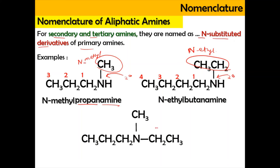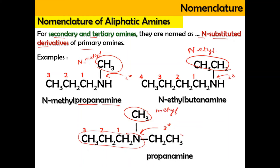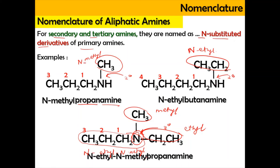Now we're going to do another example, which is a tertiary amine, because it is attached with three alkyl groups. We find the longest carbon chain: one, two, and three — so three carbons refers to propanamine. It has a substituent of methyl and also a substituent of ethyl, both attached at N. We name methyl first because it comes before ethyl alphabetically — wait, ethyl comes before methyl alphabetically — so the name is going to be N-ethyl-N-methylpropanamine.